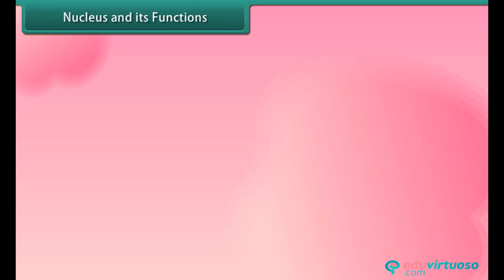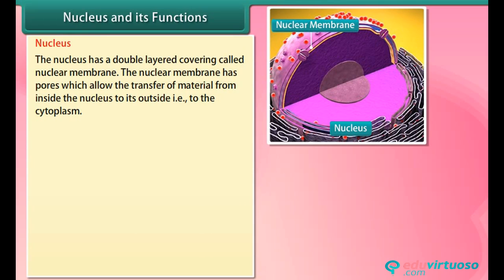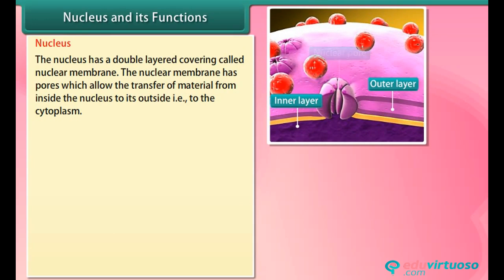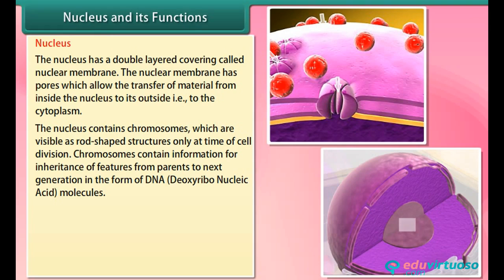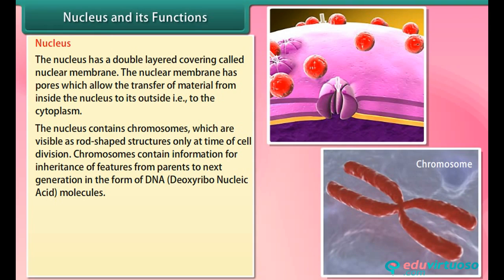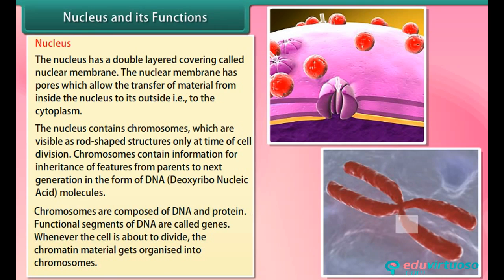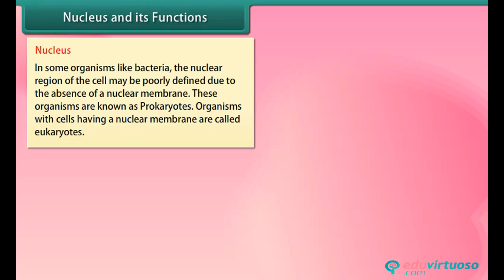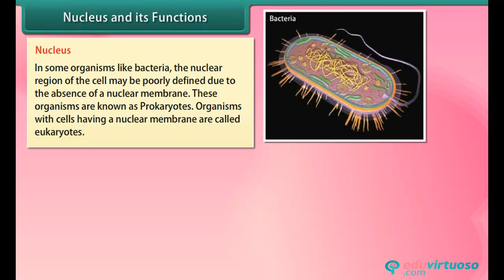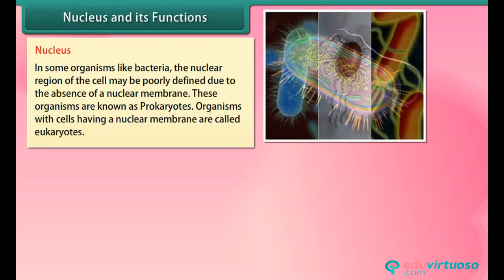The nucleus has a double-layered covering called the nuclear membrane, which has pores that allow the transfer of material from inside the nucleus to the cytoplasm. The nucleus contains chromosomes, which are visible as rod-shaped structures only at the time of cell division. Chromosomes contain information for inheritance of features from parents to the next generation in the form of DNA — deoxyribonucleic acid. Chromosomes are composed of DNA and protein; functional segments of DNA are called genes.